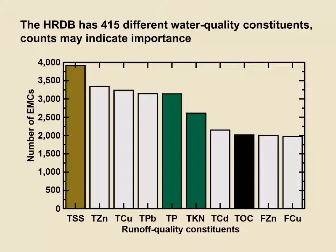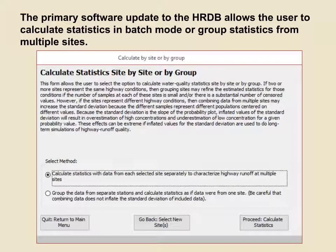The primary software update to the Highway Runoff Database allows the user to calculate statistics in batch mode from multiple sites. This is a screen capture showing the new form, which now appears between the site selection and statistics specification form. Our studies have shown that grouping data from non-similar sites can increase statistical variability compared to individual sites, and therefore the simulated risk of exceeding water quality criteria. The ability to calculate statistics for many sites in batch mode can save a lot of analysis time.